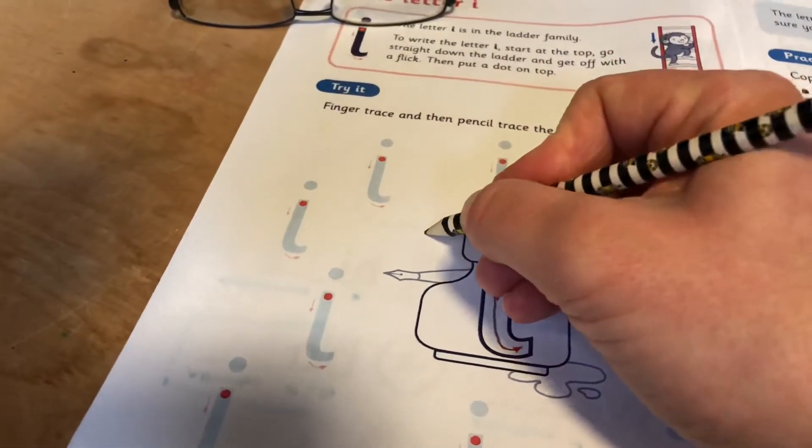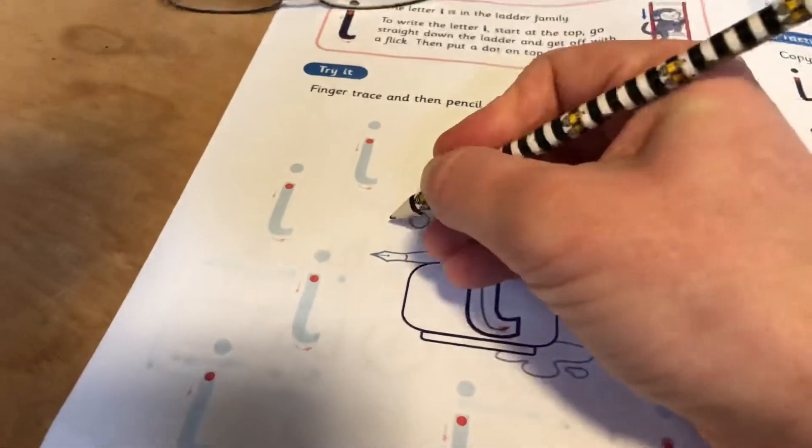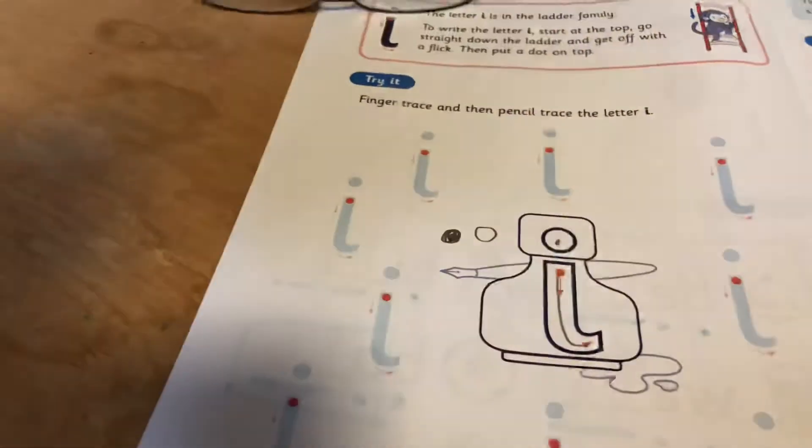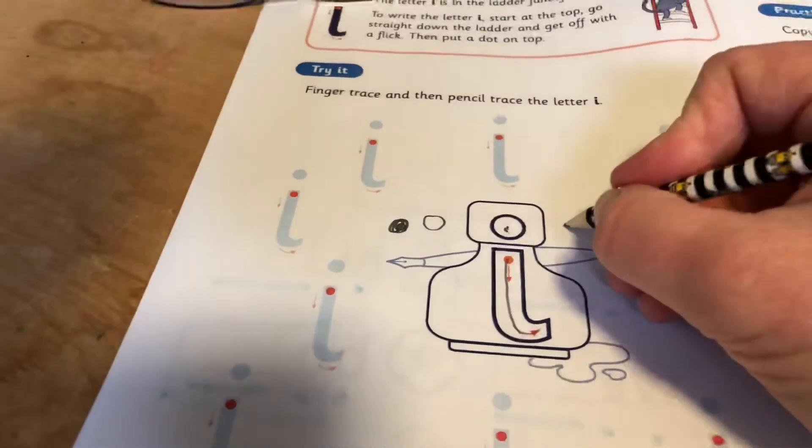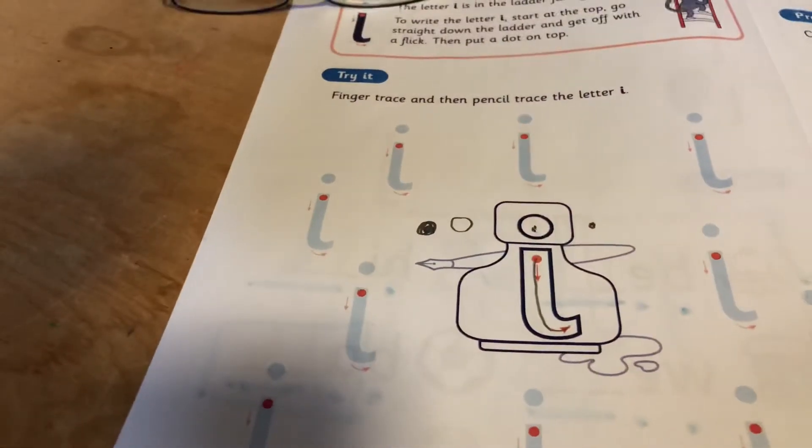When we're doing the dot, can we not do this or this? Because in Robins they don't like you. So we have to just do a dot like that. Is that okay?